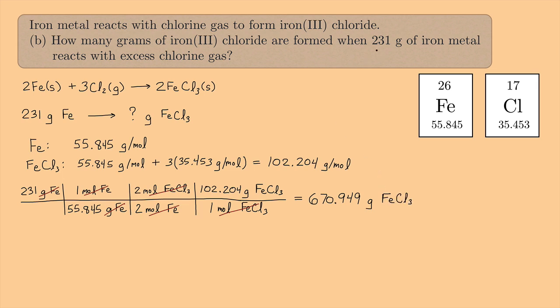We had 231, that's three significant figures here. So we should probably not include all these decimal places. Your final answer would probably be best written as 671 grams of iron(III) chloride.